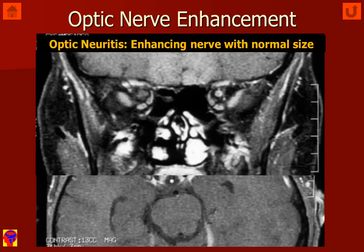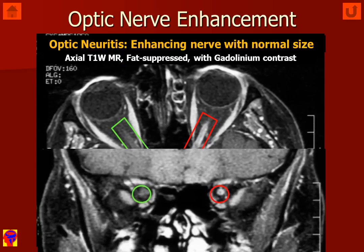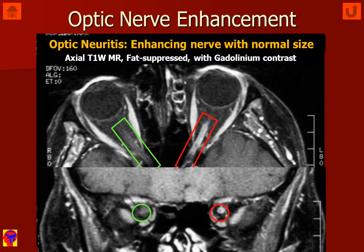If we look at the coronal images from the same patient, we can see inside the green circle the normal optic nerve without contrast enhancement, and on the patient's left orbit inside the red circle we can see abnormal enhancement of the optic nerve, which is nonetheless not enlarged. Abnormal enhancement of the optic nerve without enlargement is most consistent with an optic neuritis.